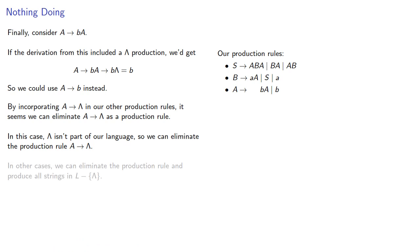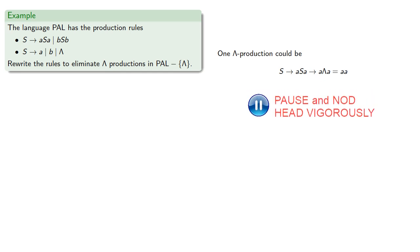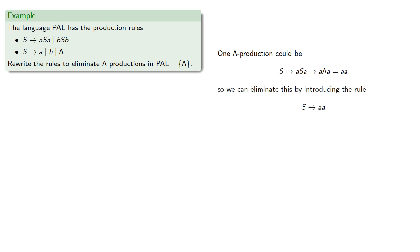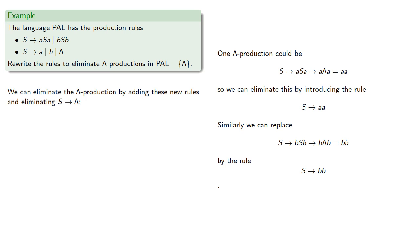In other cases, we can eliminate the production rule and produce all strings in our language except for the empty string. The language of palindromes has these production rules, including a lambda production, so let's rewrite the rules to eliminate the lambda production in the language of palindromes minus the empty string, because the empty string is, in fact, a palindrome. One use of the lambda production rule could be S produces ASA, which produces A lambda A, which is the same as AA. So we can eliminate this by introducing the rule S produces AA directly. Similarly, we can replace S produces BSB, B lambda B, which is just BB, with the rule S produces BB directly. So we can eliminate the lambda production by adding these new rules and eliminating the production S produces lambda.